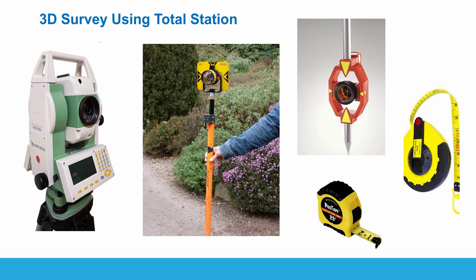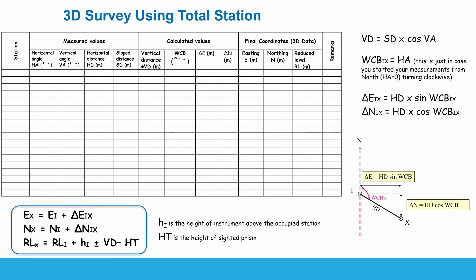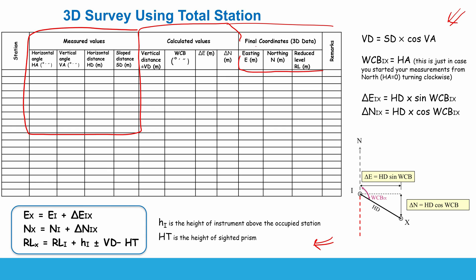The equipment you will need is of course a total station and a prism — it might be a mini prism or a prism on a pole, depending on your work — and a tape measure to measure the height of the instrument and the height of the prism. I've arranged a table to help us perform this kind of survey. There are measured values from the total station, and then we do calculations to get the easting, northing, and reduced level of each point of interest.